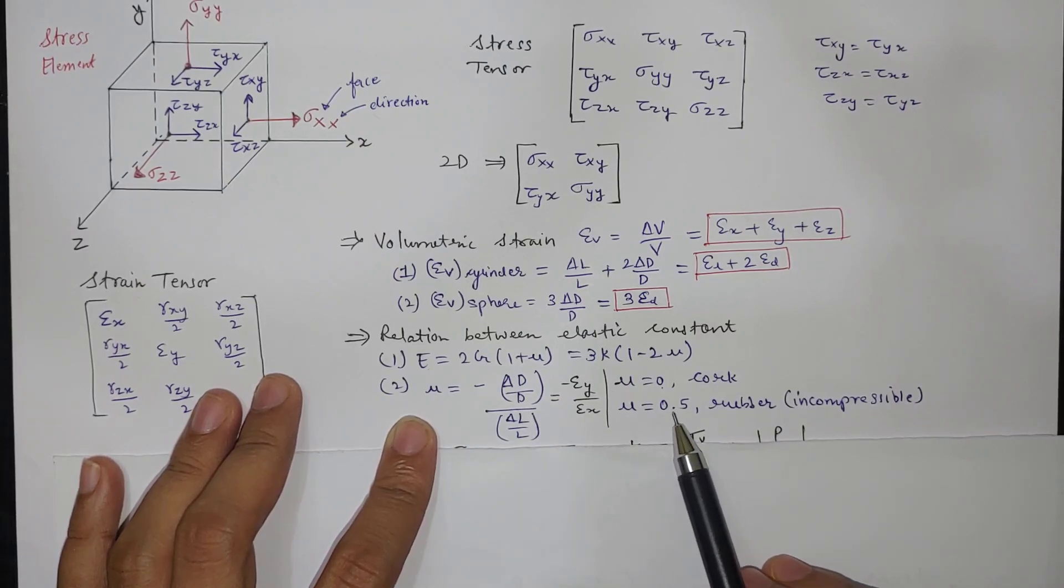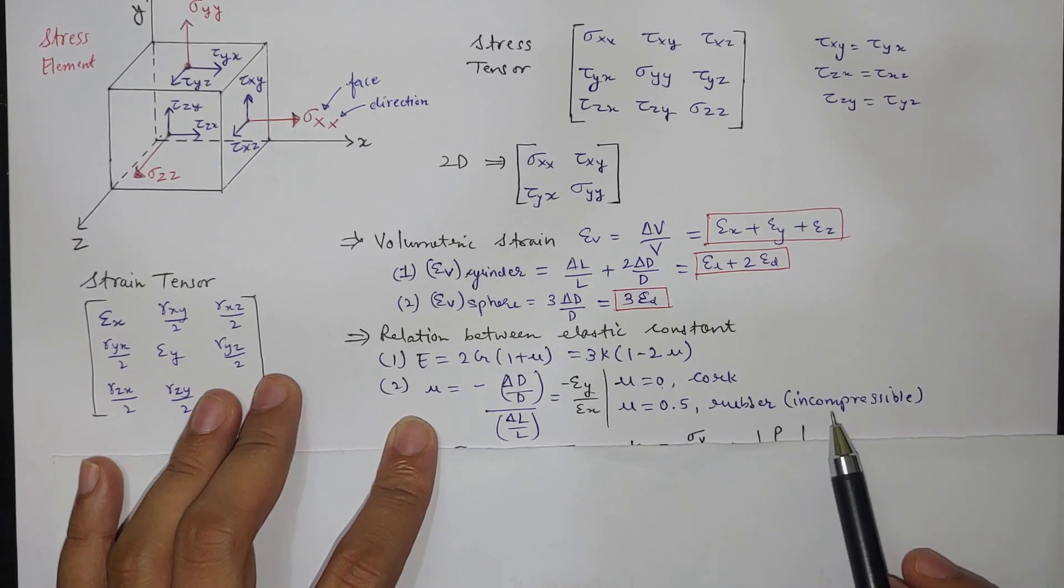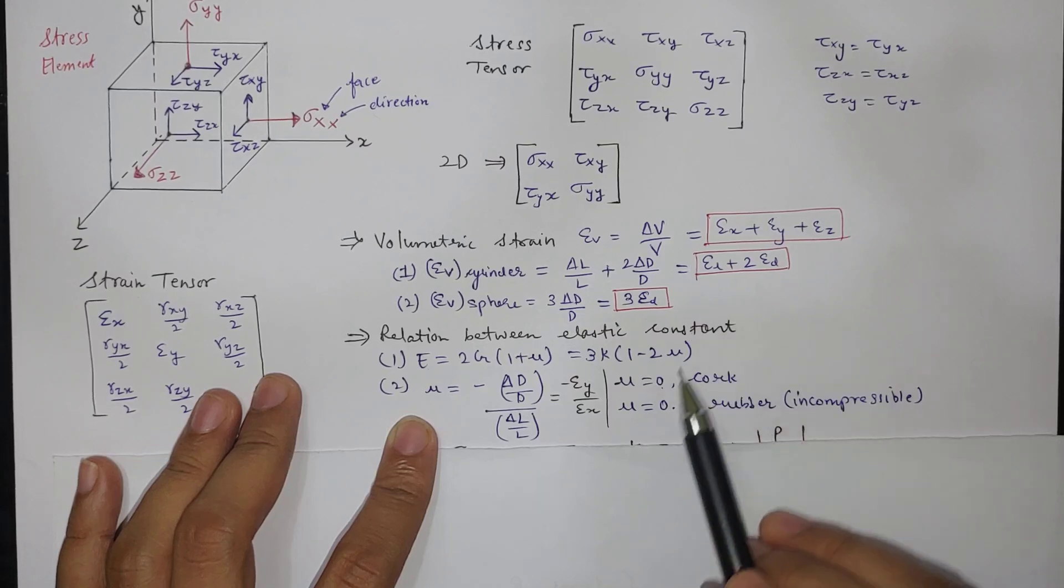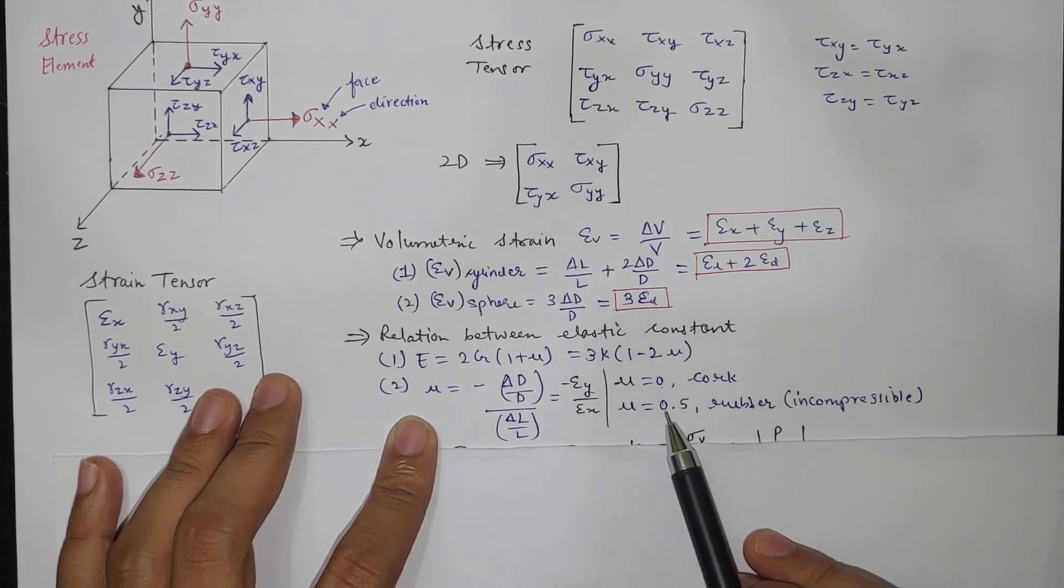And rubber is having mu equal to 0.5. So 0.5 it is called as incompressible because if you calculate its volumetric strain then its volume remains constant at mu equal to 0.5.